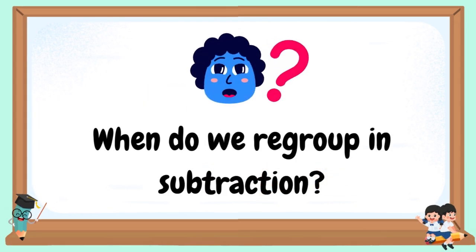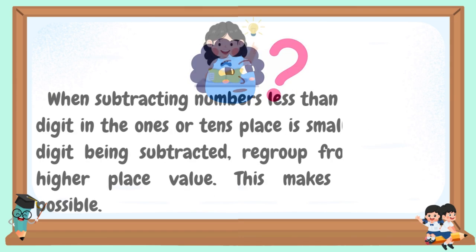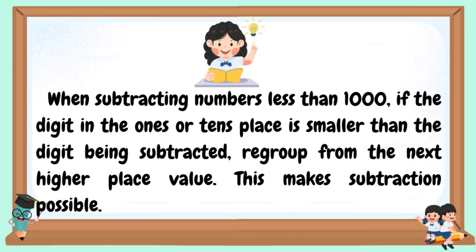When do we regroup in subtraction? When subtracting numbers less than 1,000, if the digit in the 1's or 10's place is smaller than the digit being subtracted, regroup from the next higher place value. This makes subtraction possible.